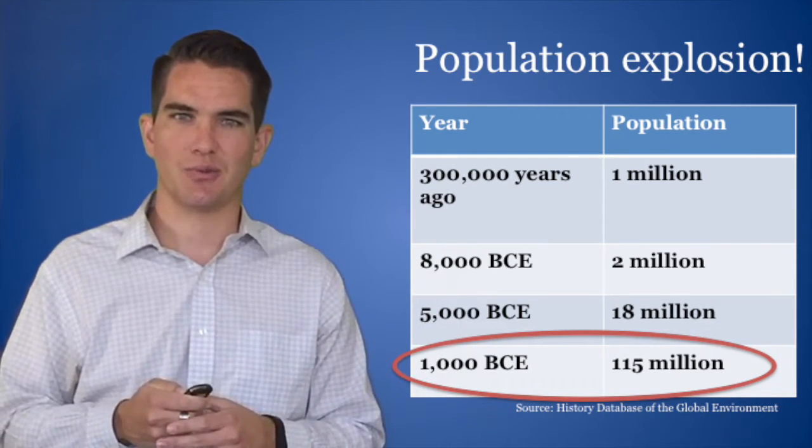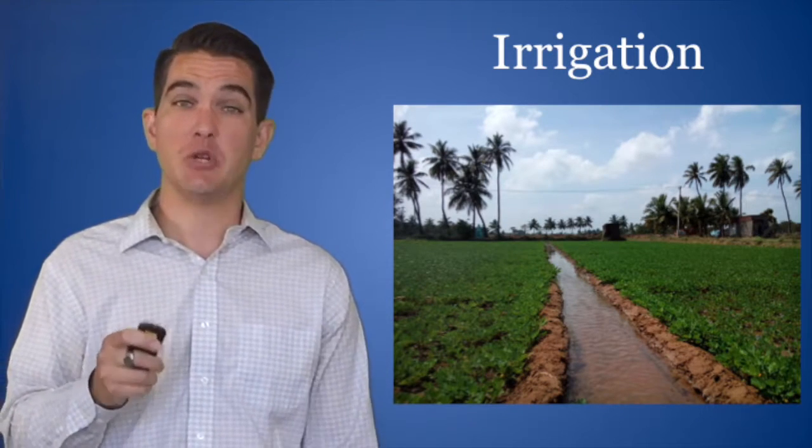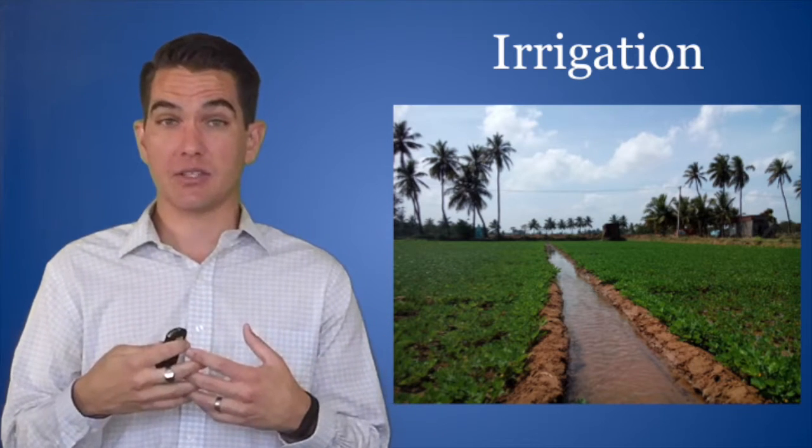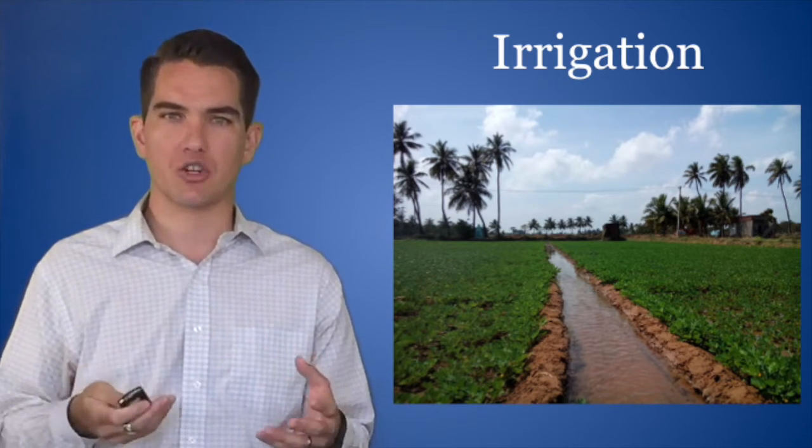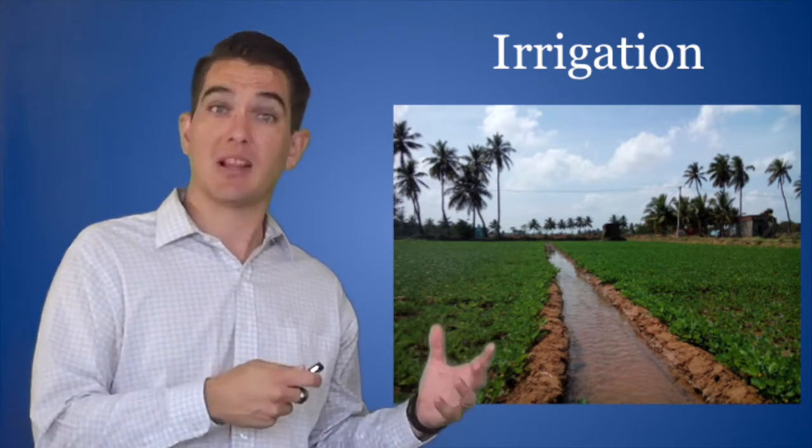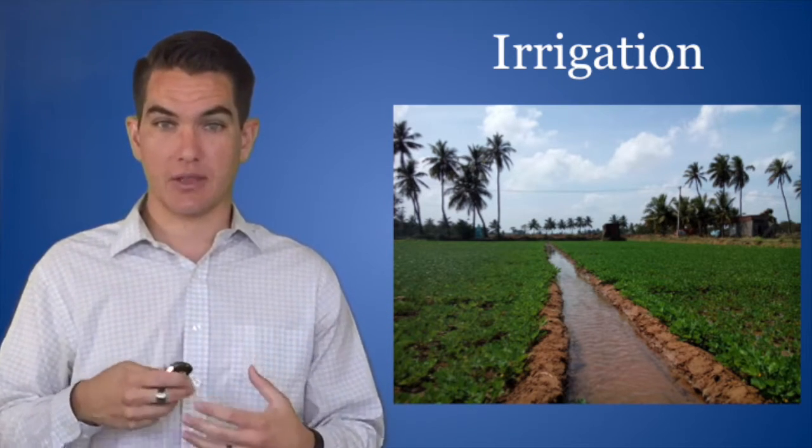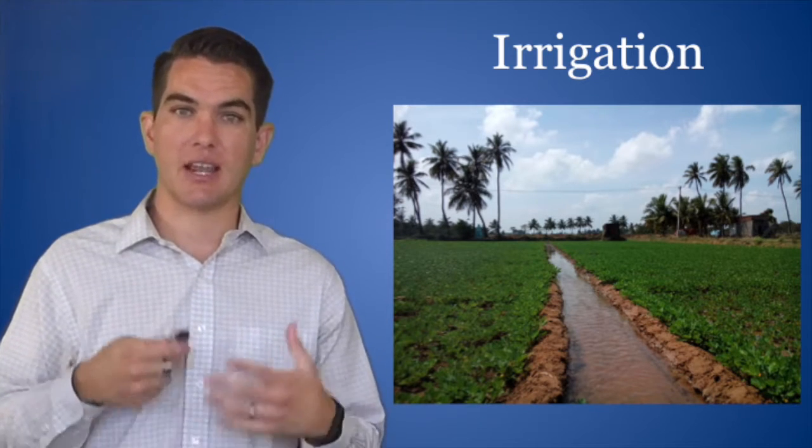The Neolithic Revolution led to an explosion in technology. Irrigation techniques were developed so they could control the water supply. And they didn't have to just rely on natural rainfall. They were able to irrigate and water crops so that they could grow them more consistently and effectively.